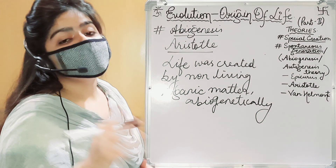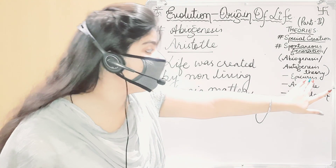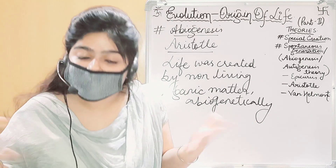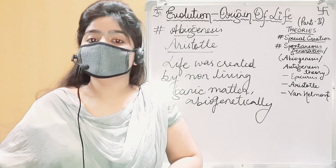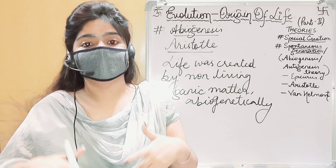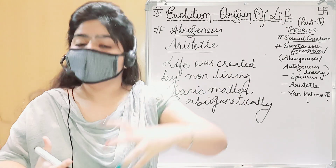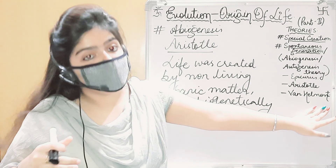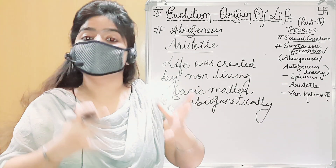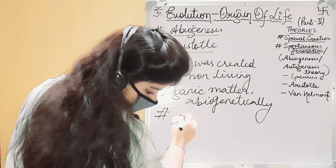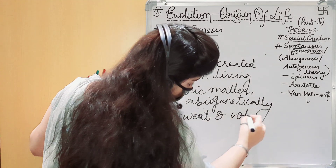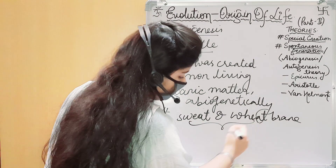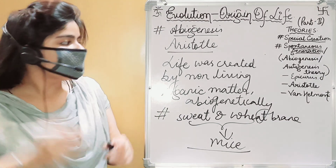In this theory, different scientists contributed. Epicurus said that many bacteria live in soil — it is home to a wide variety of bacteria — and those organisms were discovered when the soil reacts with earth and air. Van Helmont said that when human sweat and wheat bran are kept together, it gives rise to mice.